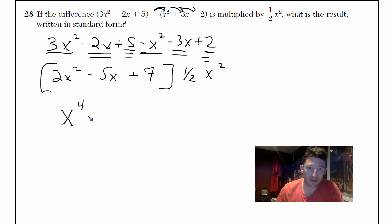5 times a half is just 5 halves. That's going to be x³. When you're multiplying x's you add the exponents when they have the same base. So x¹ times x² is x³. And finally 7 times a half is just 7 halves x².